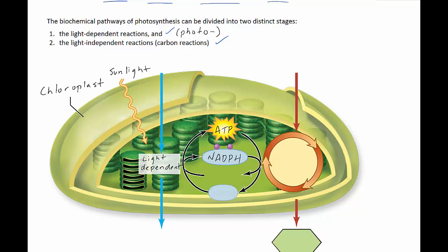NADPH actually carries a pair of energised electrons that it has taken from chlorophyll. In order to replace those two electrons that NADPH has taken from chlorophyll, chlorophyll splits water to take electrons from the water and produces oxygen as a by-product. So this is the part of photosynthesis where water is used and oxygen is produced, and it's reliant on sunlight energy to do so, hence light-dependent reactions.